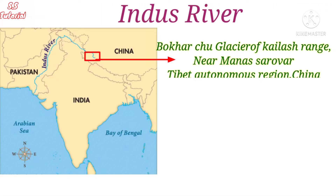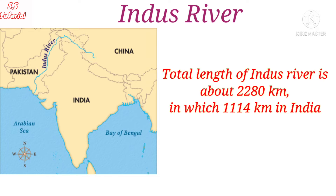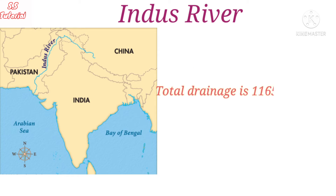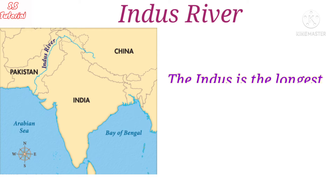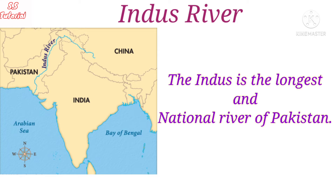The Indus river, also known as Sindhu, originated from the Tibet Autonomous Region of China near Lake Mansarovar at an elevation of about 5,500 meters from the Bokhar Chuk Glacier of the Kailas range. Its length is about 2,880 kilometers, with 1,114 kilometers in India, and its total drainage area is about 11,65,000 square kilometers. It is the longest and national river of Pakistan.